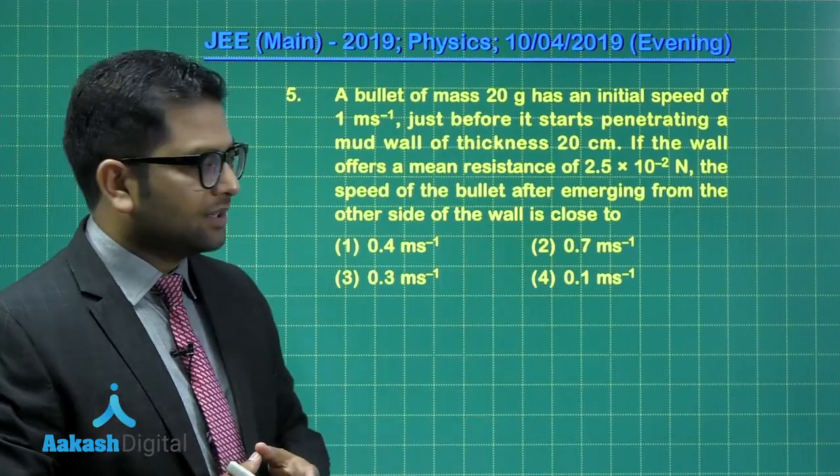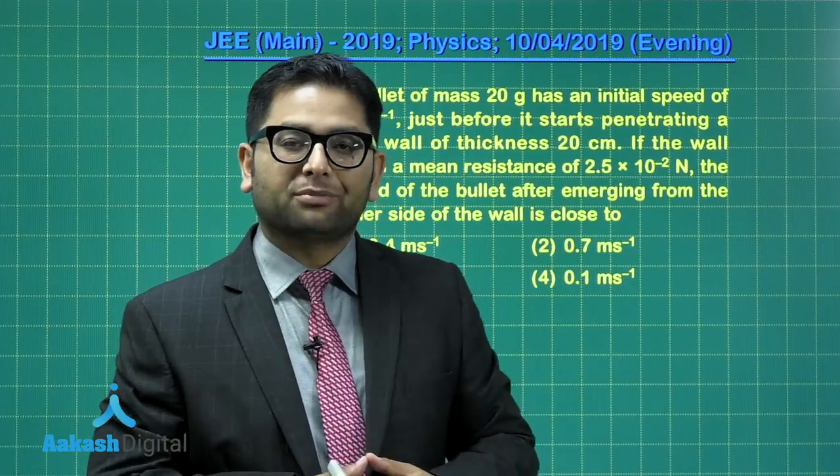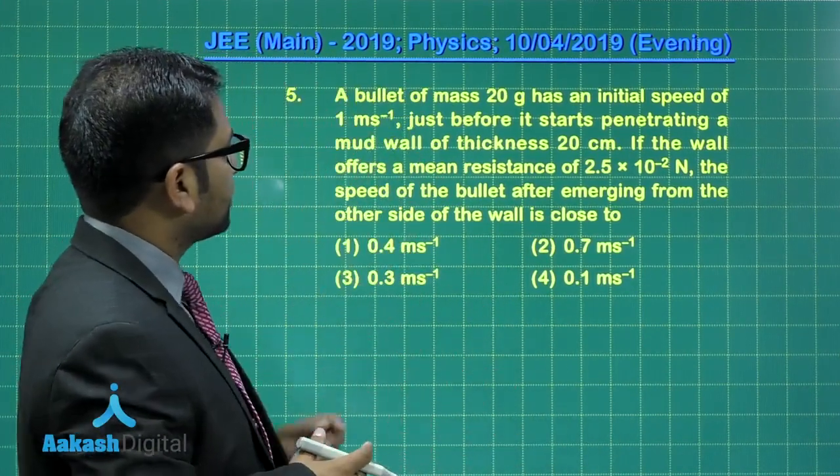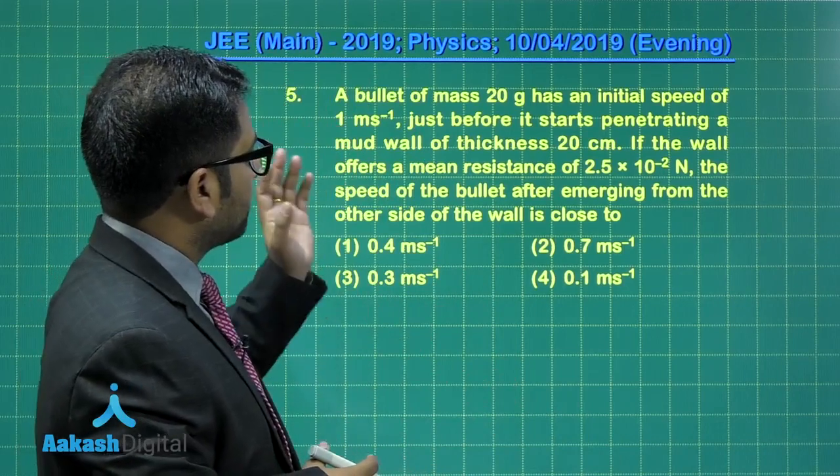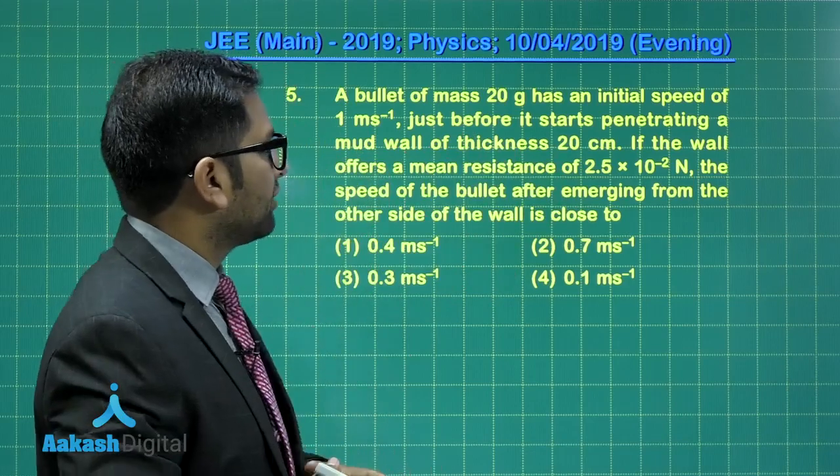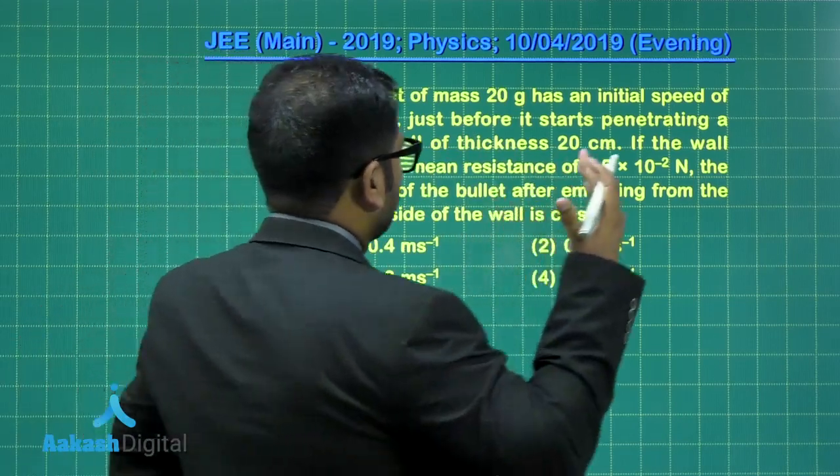Fifth question, a regular feature question. A simple kinematics equation has to be put in order to get the answer. It says there's a bullet of mass 20 grams, and before penetrating a mud wall of thickness, it has a speed of 1 meter per second.